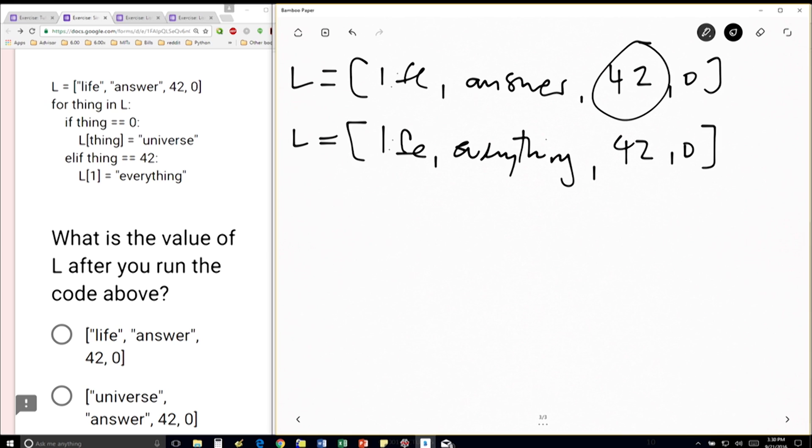As soon as we do that, we've finished with the loop when L was 42. And then we go through 0. So now thing takes on the value 0. And we say if thing is equal to 0, well, we're good on that. L at position thing is equal to universe. So L at position 0 is equal to universe. So that says, I'm going to replace life with universe. And then everything else stays the same, 42 and 0.